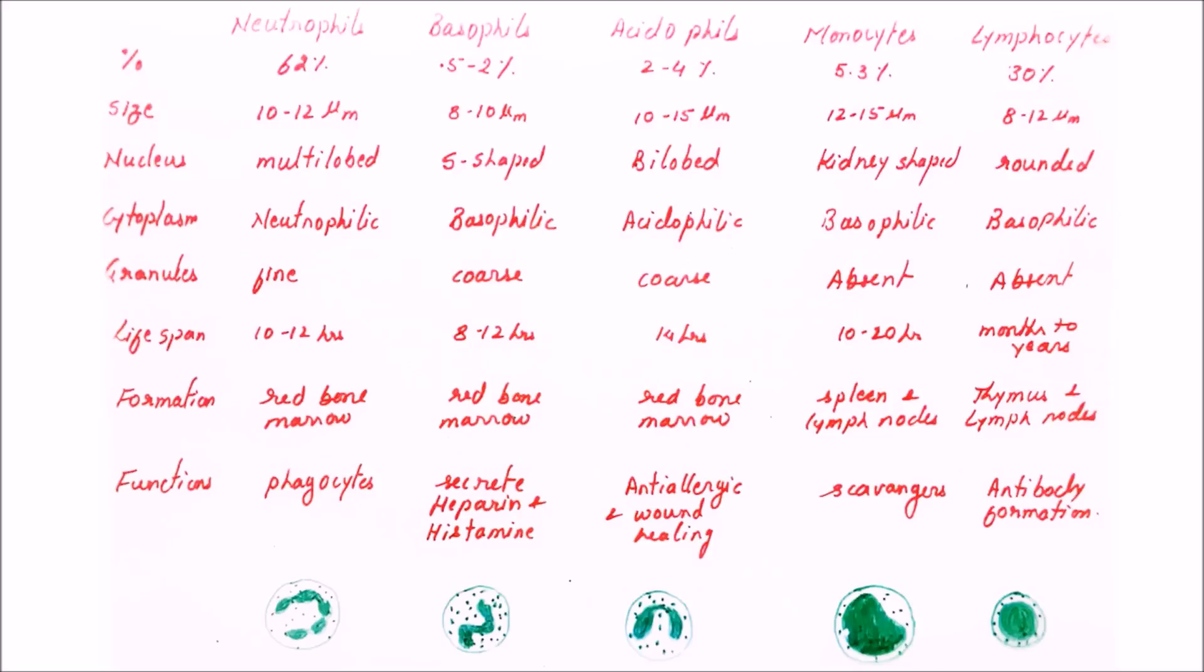Now the last point is comparison on the basis of the functions they perform. Neutrophils and monocytes are the main phagocytes. In neutrophils, we have written the function as phagocytes—they engulf the foreign particles. In monocytes, it is written as scavengers, that means they also feed on the foreign particles. So both neutrophils and monocytes are phagocytic in nature.